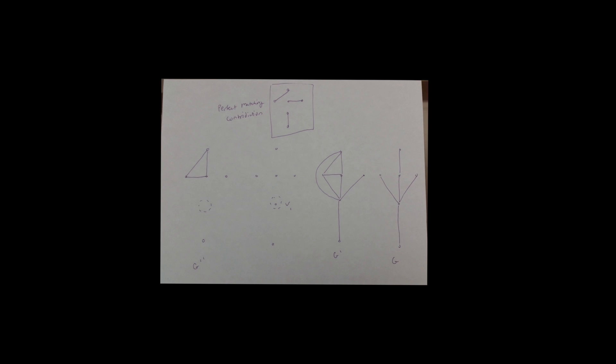This perfect matching is only the edges which compose g prime, as it does not include b,d or a,c. Thus, this perfect matching is only a perfect matching of g prime, a contradiction as g prime is defined as not having a perfect matching.